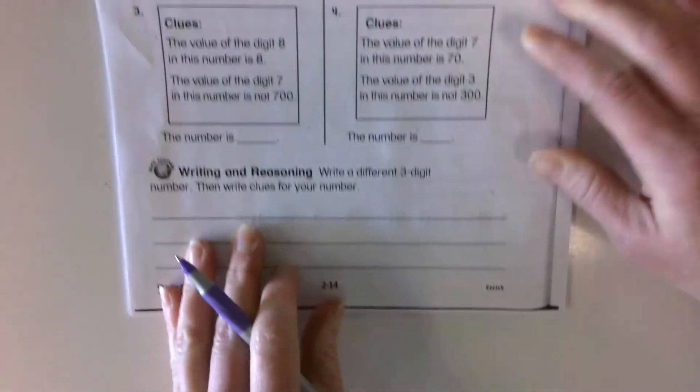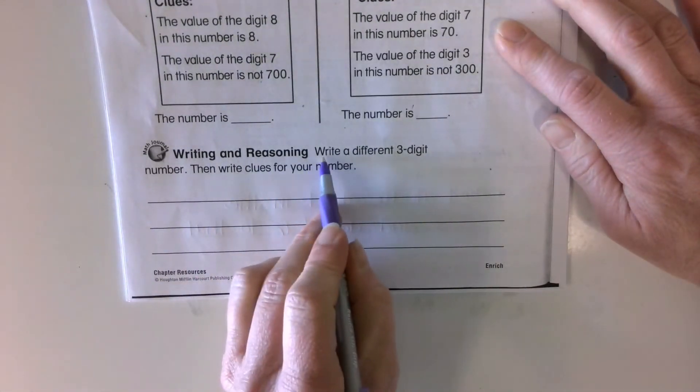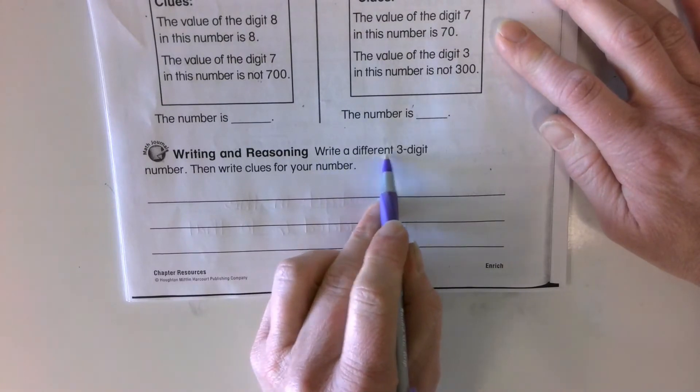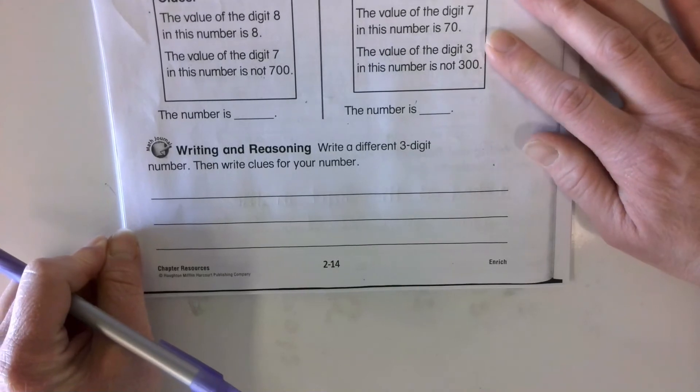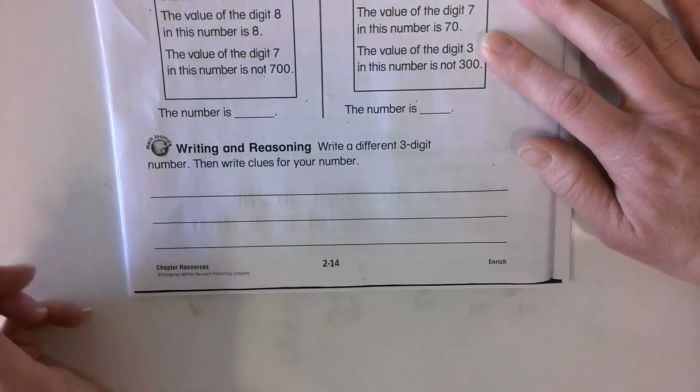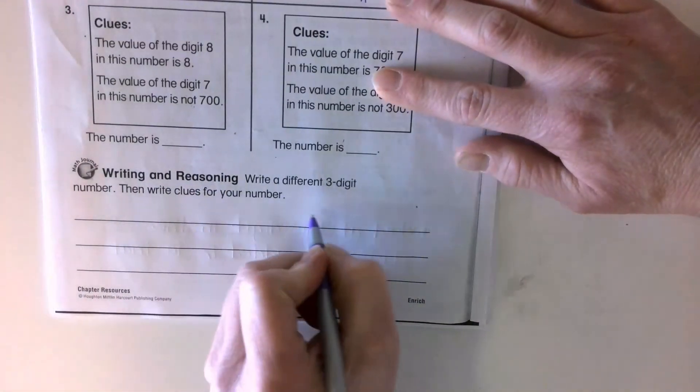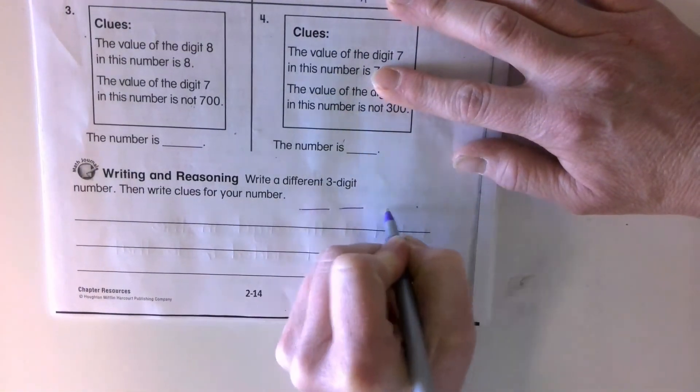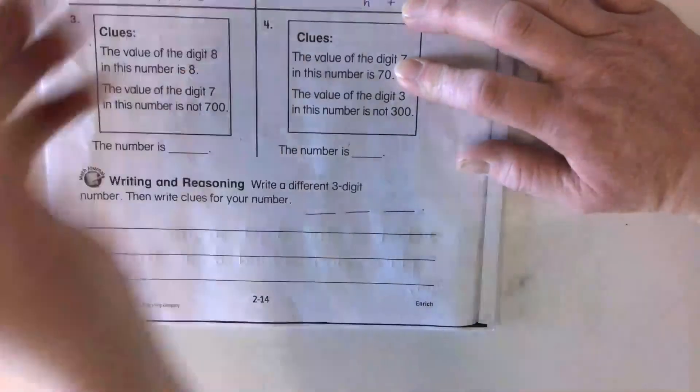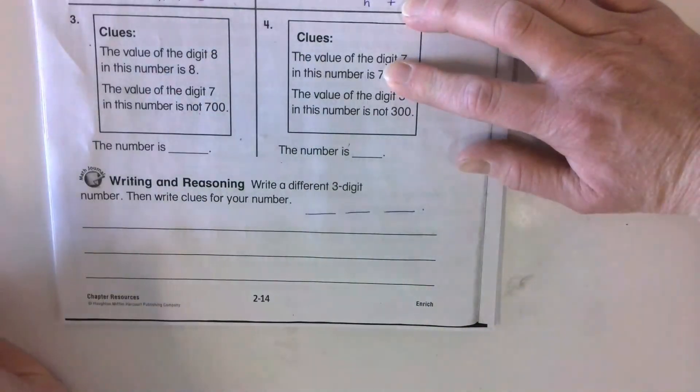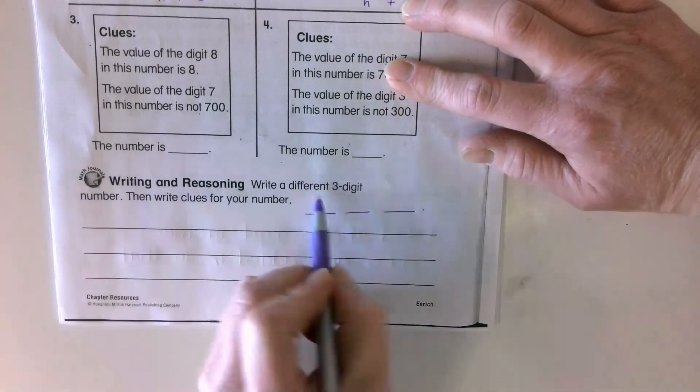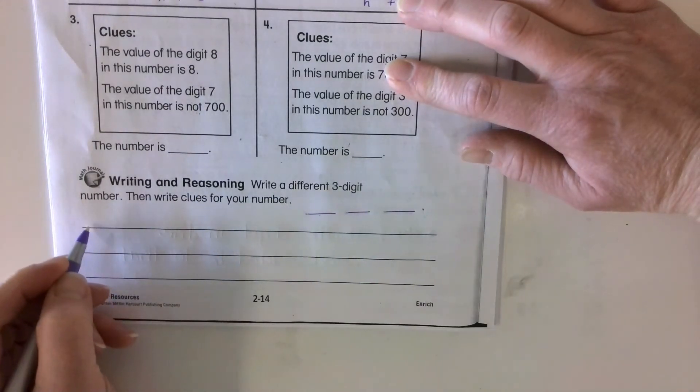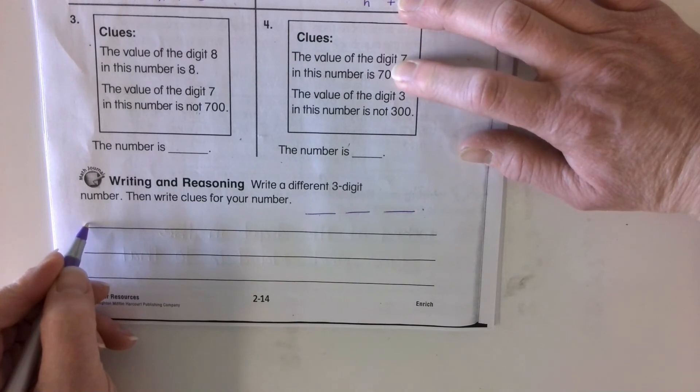On the bottom, it says, write a different three digit number. Then write clues for your number. So you're going to think of a different three digit number. So not these. Not eight, seven, and three. It's going to be any three digit number you want. And then you're going to think of clues that go with it.